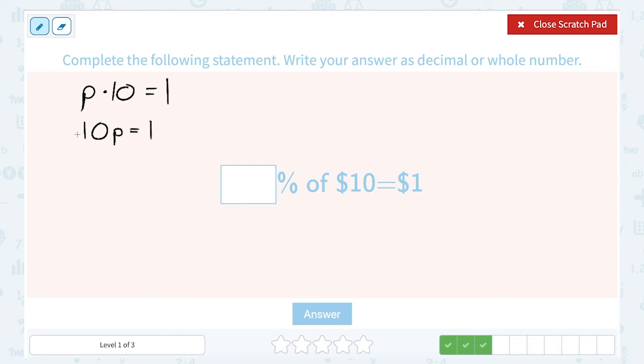So if I wanted to solve this for p, p is being multiplied by 10, so my inverse or opposite would be to divide by 10. So 1 divided by 10, well, that's 1 tenth. Another way to write 1 tenth is to put 1 in the tenths place, so 0.1.